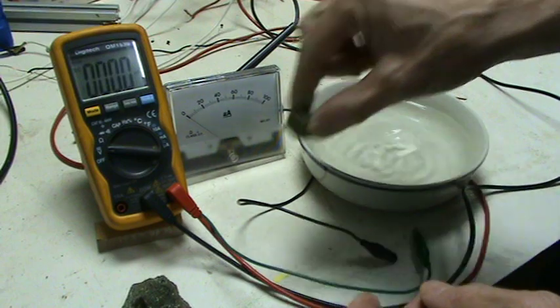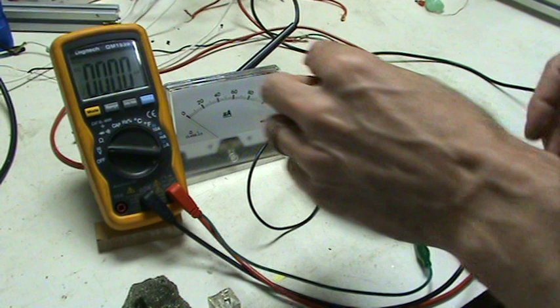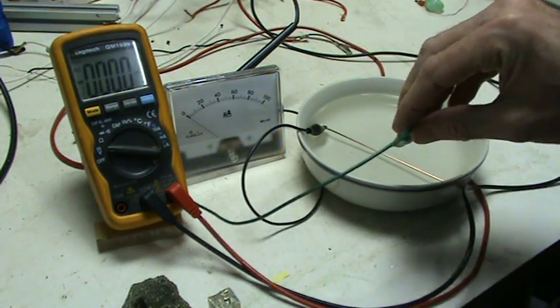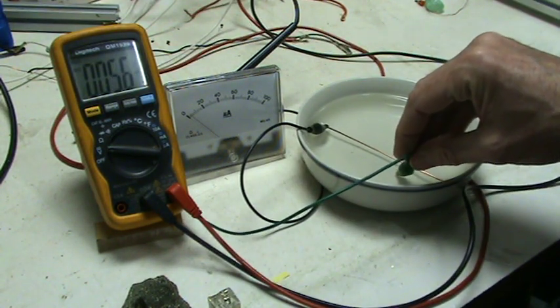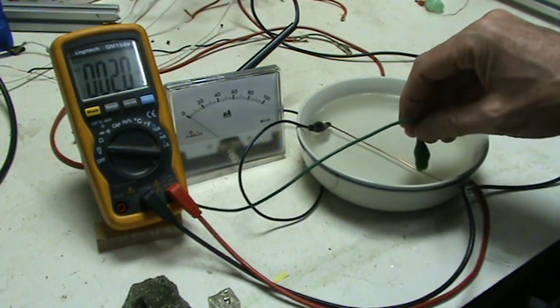OK, and just for the sake of the experiment, we'll drop the iron welding rod in there as well. See what happens with that. We get a tiny, tiny little bit, maybe one or two microamps, very little.